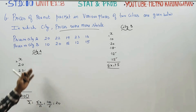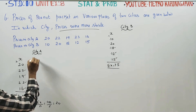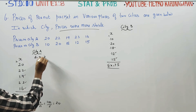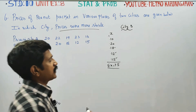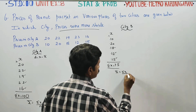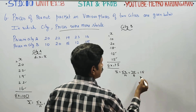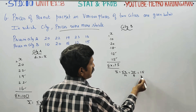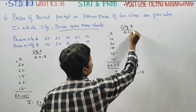Since the answer is a round number with no decimal, we can go for the actual mean method. For City B, x̄ equals sigma x by n, that is 75 by 5, giving 15 — also a round number. So we proceed with the actual mean method where d equals x minus x̄.